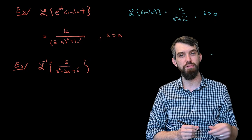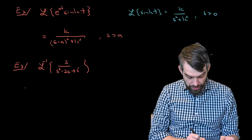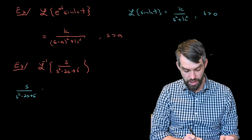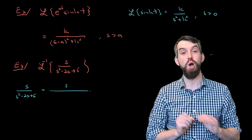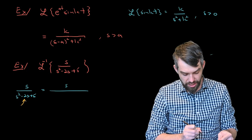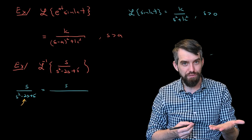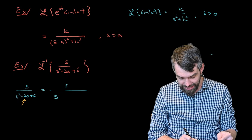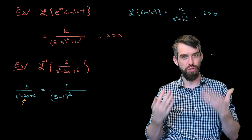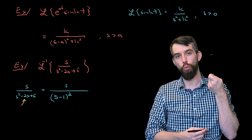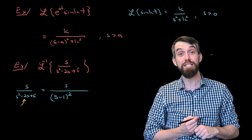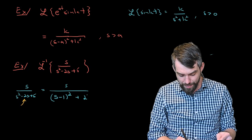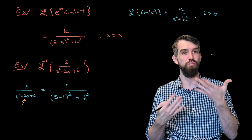The reason we complete the square relates to expressions of the form k/((s-a)² + k²) from the previous example. Let me complete the square on s² - 2s + 5. I focus on the coefficient of the linear term, which is -2. Dividing by 2 gives -1, so I write this as (s-1)². Expanding (s-1)² gives s² - 2s + 1, so I need to account for the remaining 4, which I write as 2² to be compatible with the k² terms seen in Laplace transforms of sine and cosine.